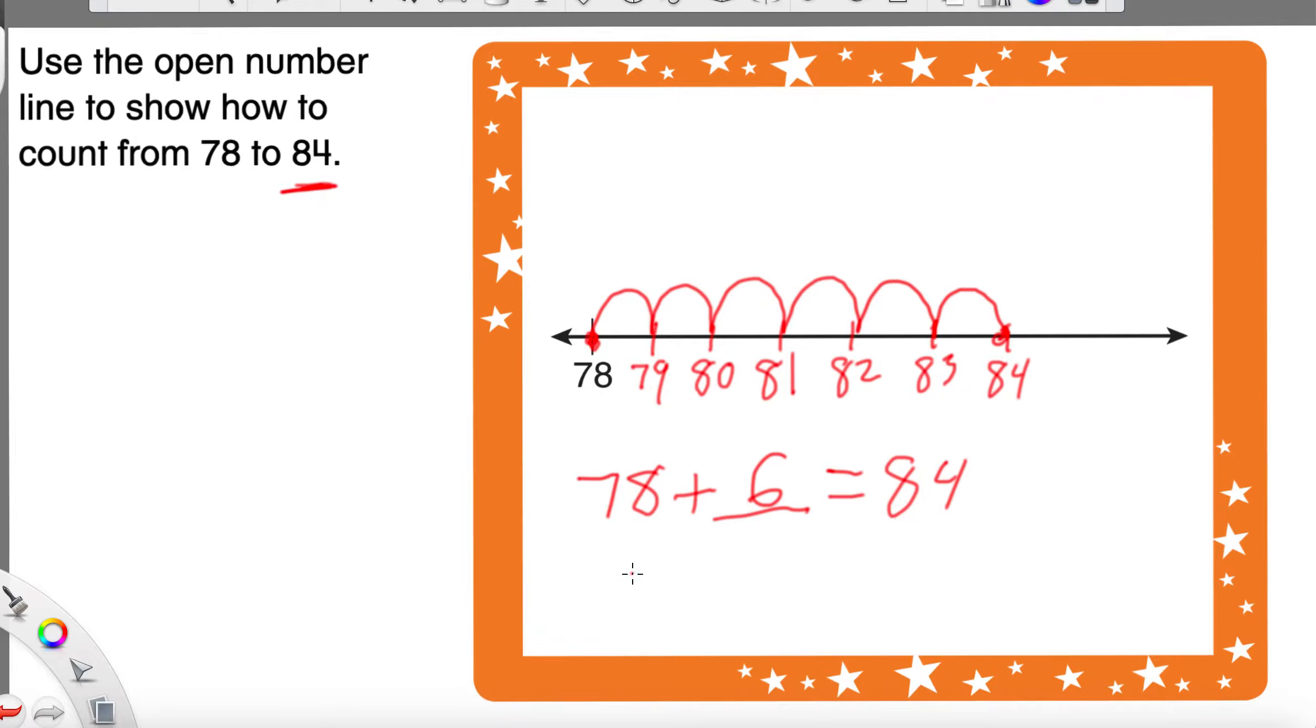We can take this big number, 84. So we could write 84 minus, let's say, 6. So we use the 84, we use the 6. What number did we not use that would be part of this related fact? 78.